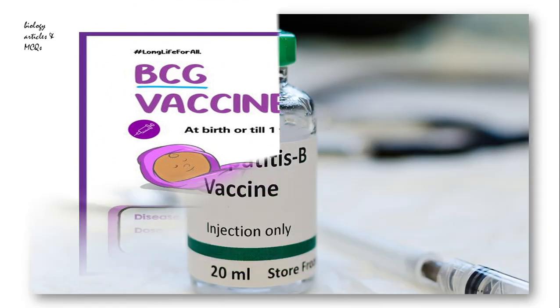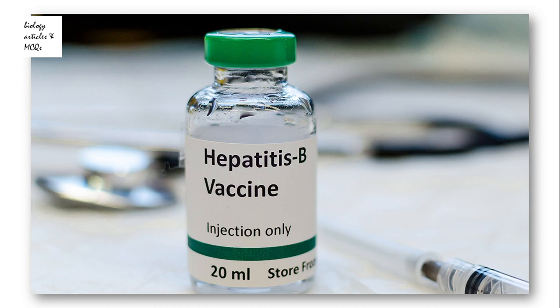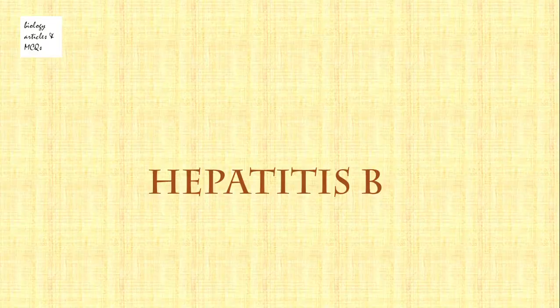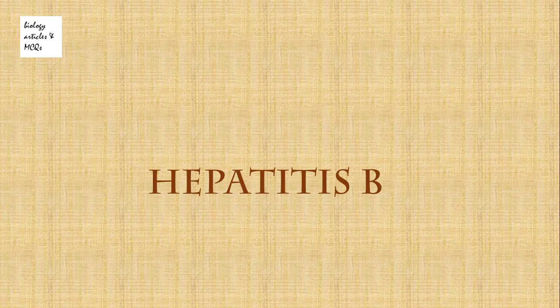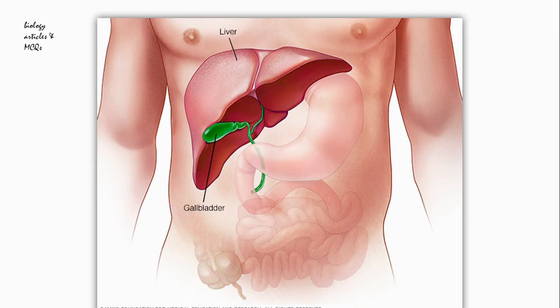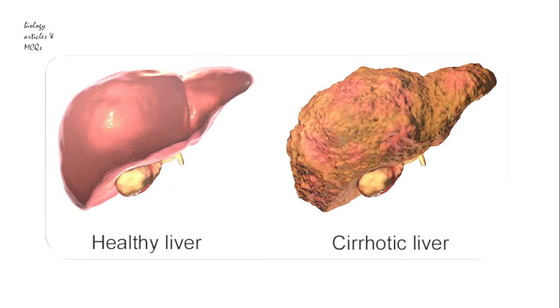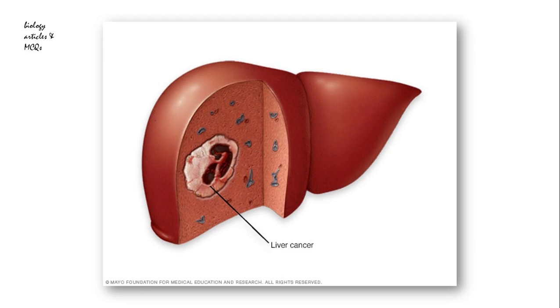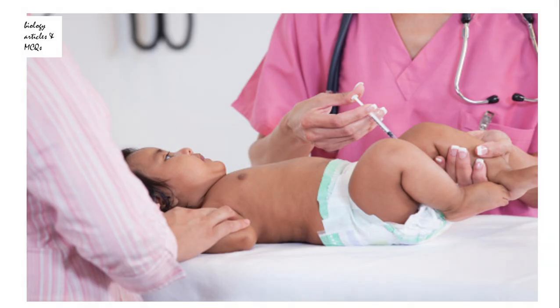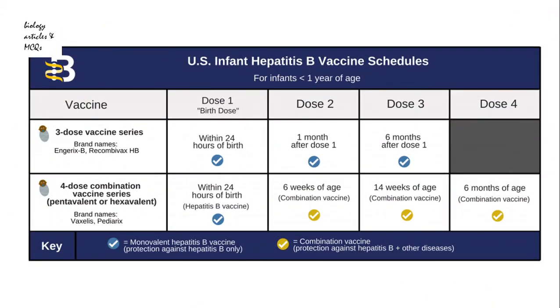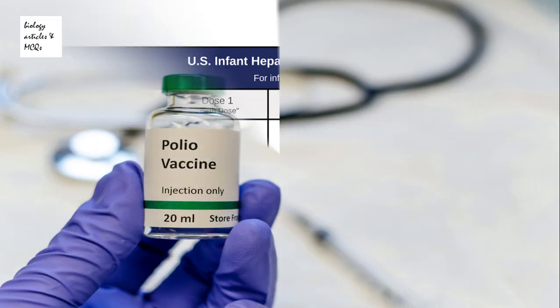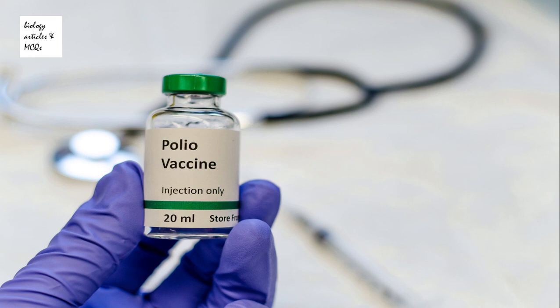The second vaccine is the Hepatitis B vaccine. As its name shows, it is used for the Hepatitis B virus. Hepatitis B is a very dangerous liver infection that can develop into cirrhosis and liver cancer later in life. Infants should get their first dose at birth, and the series is usually completed at 6 to 18 months of age.